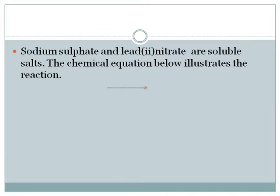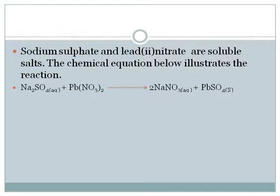Now let us look at the equation that leads to the production of the soluble salt and the insoluble salt. The chemical equation is as illustrated below. We have sodium sulfate reacting with lead-2 nitrate to yield sodium nitrate, which is a soluble salt, and lead-2 sulfate, which is an insoluble salt.